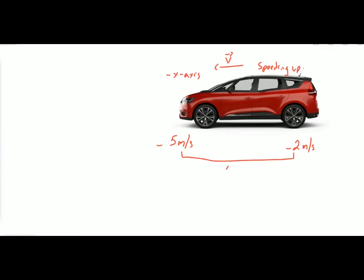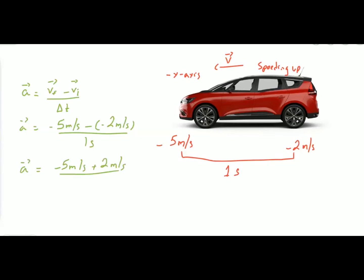The speed increases during a time interval of 1 second. Using the acceleration formula: acceleration = (final velocity − initial velocity) / time = (−5 − (−2)) / 1 = (−5 + 2) / 1 = −3 m/s². The acceleration is negative, and its direction is along the negative x-axis — the same direction as the velocity.